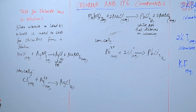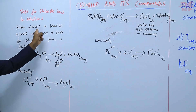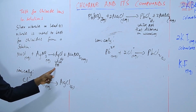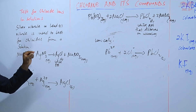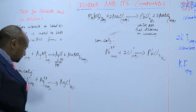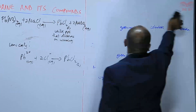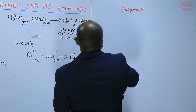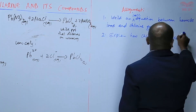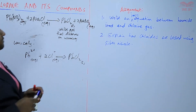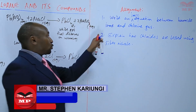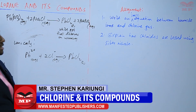So basically, when testing for chlorides in solutions, we can either use silver nitrate or lead(II) nitrate. Silver nitrate forms a white precipitate with chlorides. Lead(II) nitrate also forms a white precipitate with chlorides, but that one dissolves on warming. For our assignment: question one — write an ionic equation between bromide ions and chlorine gas. Question two — explain how chlorides are tested using silver nitrate.